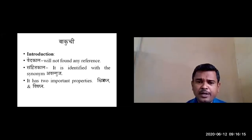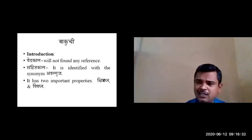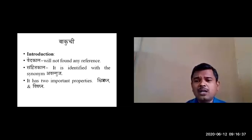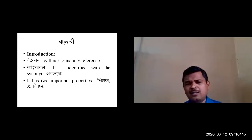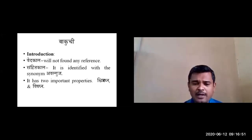In Samhita Kala, Bakuchi is identified with the synonym Aval Guja. The term Bakuchi becomes more familiar during the Nikantu period. In Samhita period it is well known as Aval Guja, and classical preparations like Aval Guja Lepa and Aval Guja Churna were prepared under that name. The drug has two important properties: Shvitragna and Vishagna.